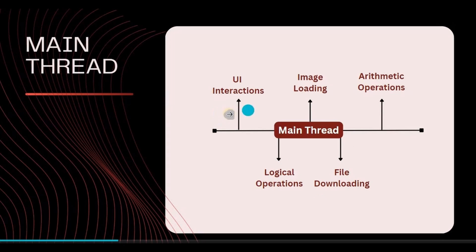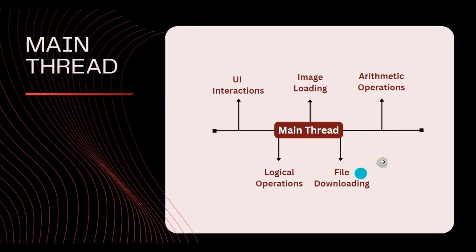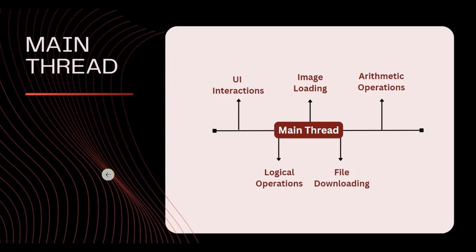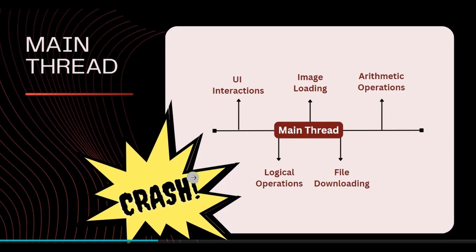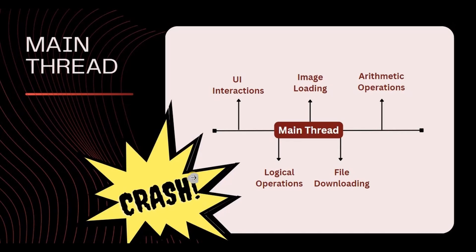Now imagine how tough it is to handle so many processes by a single thread. The app will lag, it will freeze, and it can even crash — and that's not how a professional app should work. Coroutines were introduced to overcome the burden placed on the main thread.